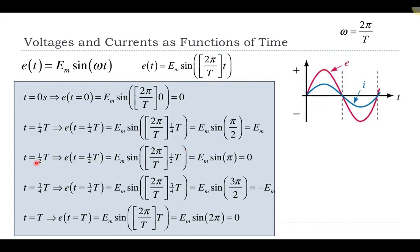If I plug in half a period, I go through the same process: the periods cancel and the twos cancel, giving sine of π. Sine of π is sine of 180°, which is zero. That makes sense because at half of the cycle on the picture, I'm back to zero again.